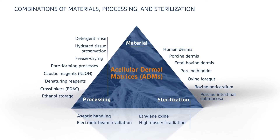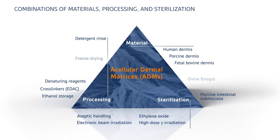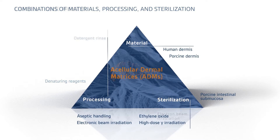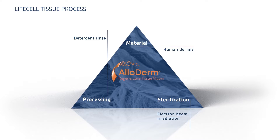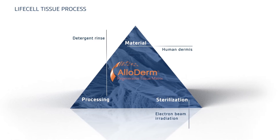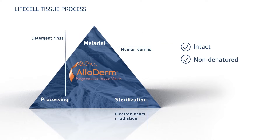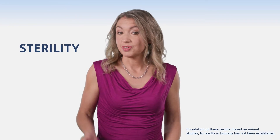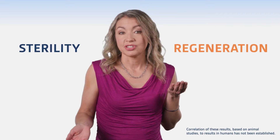So, how can we maximize the chance that an ADM will give us the desired properties and function? Allergan Aesthetics has over 25 years of experience in regenerative medicine. Our proprietary LifeCell tissue process uses what we've found to be the optimal combination of source material, processing regimen, and sterilization procedure to ensure an intact, non-denatured, non-cross-linked ADM that preclinical studies show will be positively recognized by the body. This process helps Alloderm balance sterility with the functional characteristics that support regeneration.